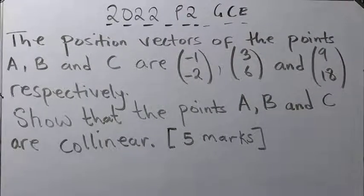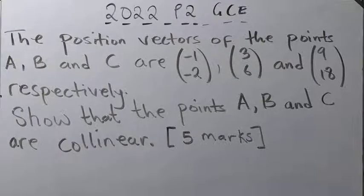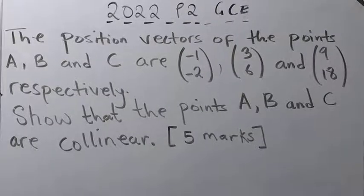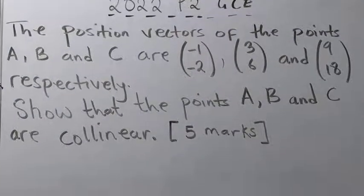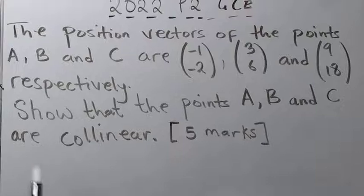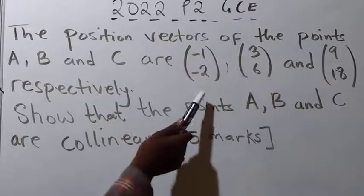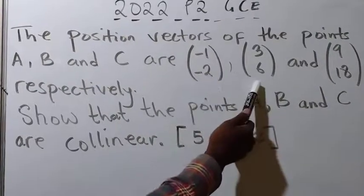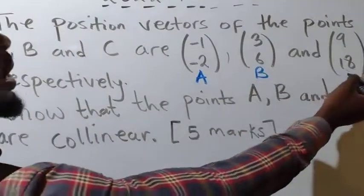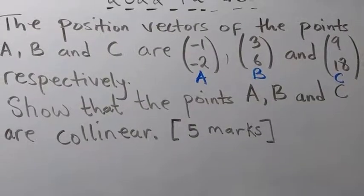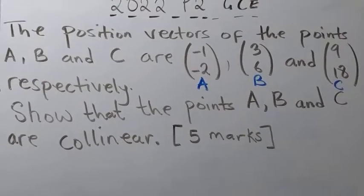This question is specifically centered on vectors — collinearity of vectors. If you follow my videos, I posted a video sometime back explaining how you can find the collinearity of vectors. The question reads: the position vectors of points A, B, and C are given — negative 1, negative 2 for A, then B and C values. Show that the points A, B, and C are collinear. It carries five marks.